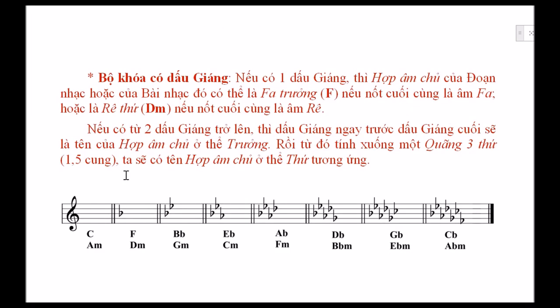Trường hợp thứ ba, bộ khóa có dấu giáng. Nếu chỉ có một dấu giáng, thì hợp âm chủ của đoạn nhạc hoặc của bài nhạc đó có thể là pha trưởng, ký hiệu là F, nếu nốt cuối cùng là âm pha. Hoặc là rê thứ, ký hiệu là Dm, nếu nốt cuối cùng là âm rê.